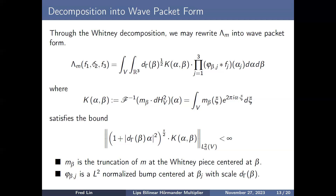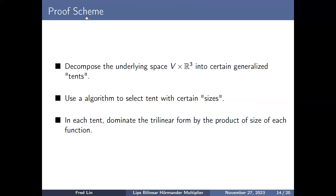To bound the trilinear form, whose underlying space is V × ℝ^3 where V is a two-dimensional hyperplane, our strategy is to decompose the underlying space into generalized tents, use an algorithm to select tents of a given size, dominate the trilinear form on each tent by the product of sizes of the three functions, and then perform modifications to achieve sharp regularity. This last step is the tent estimate.